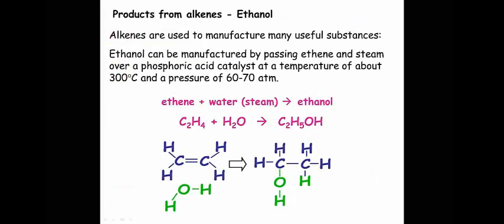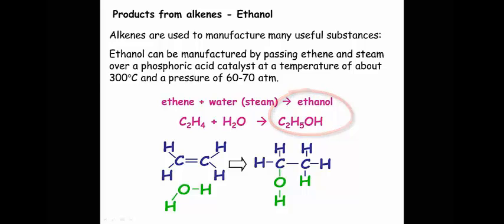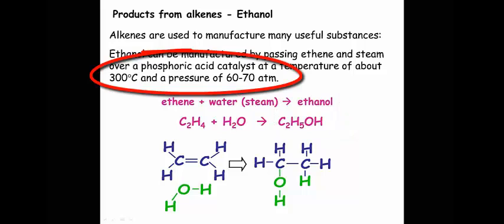The equation for the manufacture of ethanol from ethene involves ethene, C2H4 gaseous, and water in the form of steam, H2O gaseous, producing ethanol, C2H5OH in a gaseous form. Over the arrow we write 300 degrees C, 70 atmospheres, and a phosphoric acid catalyst.